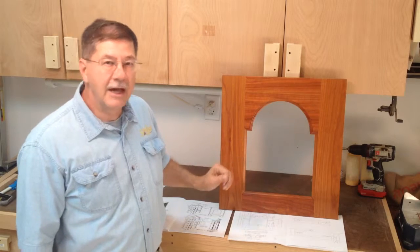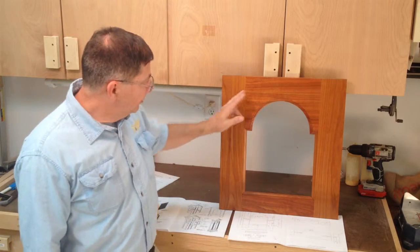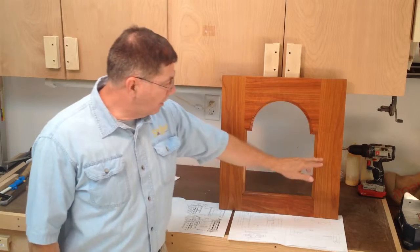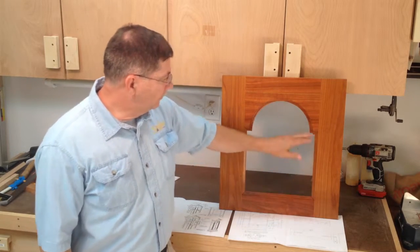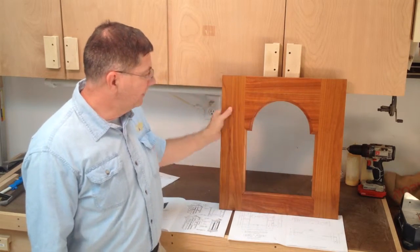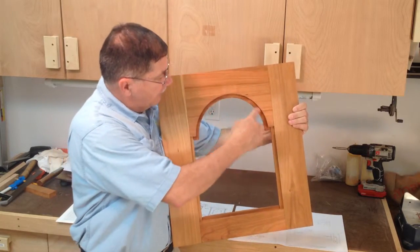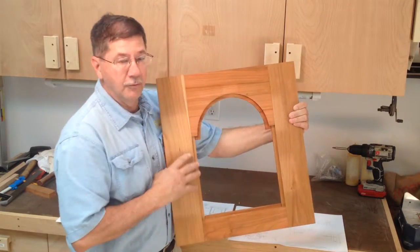This uses our glass panel set of router bits. We'll cut out the four individual parts, route the beautiful decorative trim around, and also put a rabbit. That's where the clock face and the moon dial will fit.